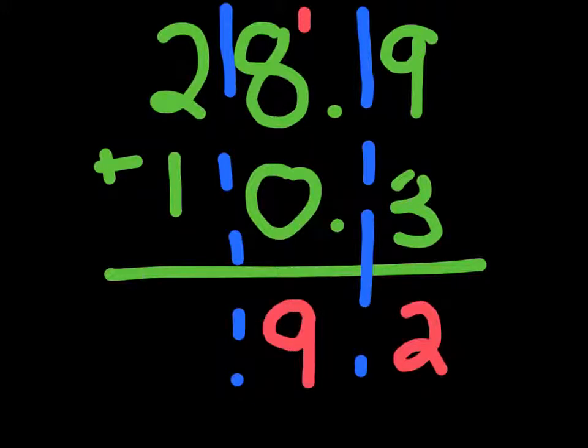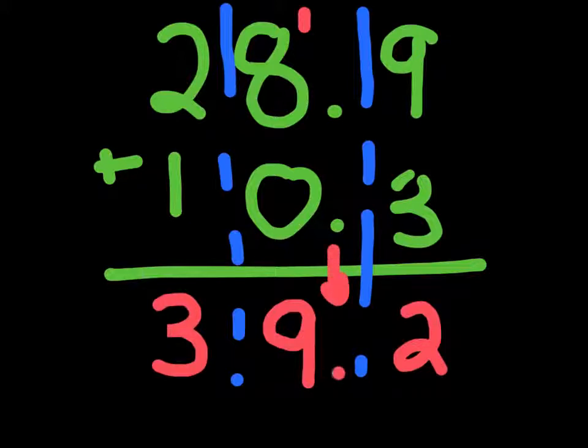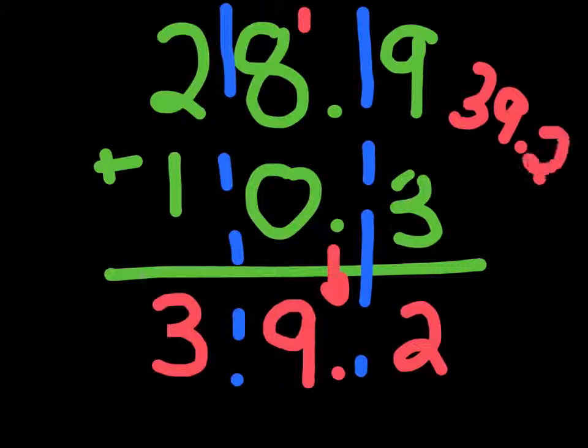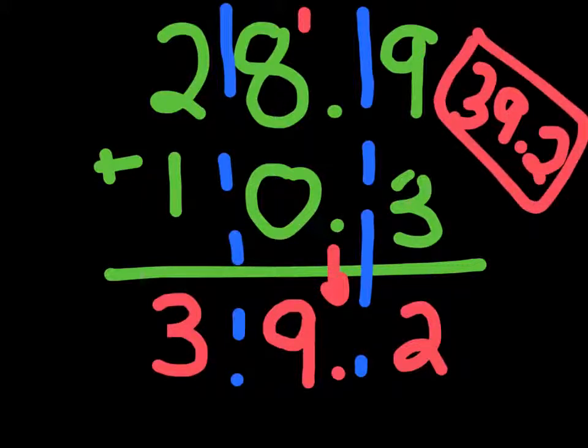Then we would go on and do our left-hand column. Meaning, 2 plus 1. 2 plus 1 is just 3. Then we bring down the decimal point right here. So, we know that our answer to 28.9 plus 10.3 is just 39.2. 39.2. Fairly simple. So, it's the same thing as regular addition. No need to worry about it.